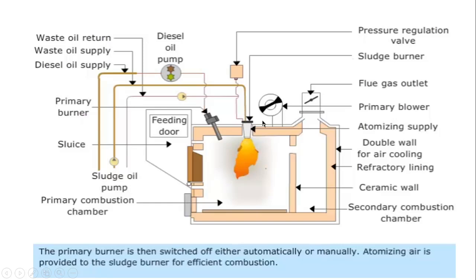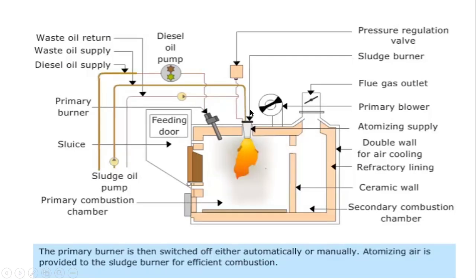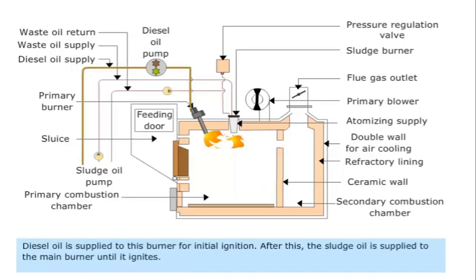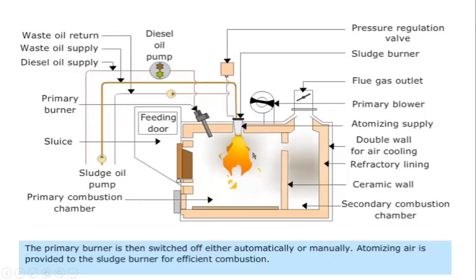At that time, for efficient combustion, the draft fan will adjust itself. Once it has established completely, the flame will be burning properly. During this process, you can see here the draft fan — how the primary blower is behaving. It adjusts through different positions depending upon the flame, so that efficient combustion inside the primary combustion chamber takes place.